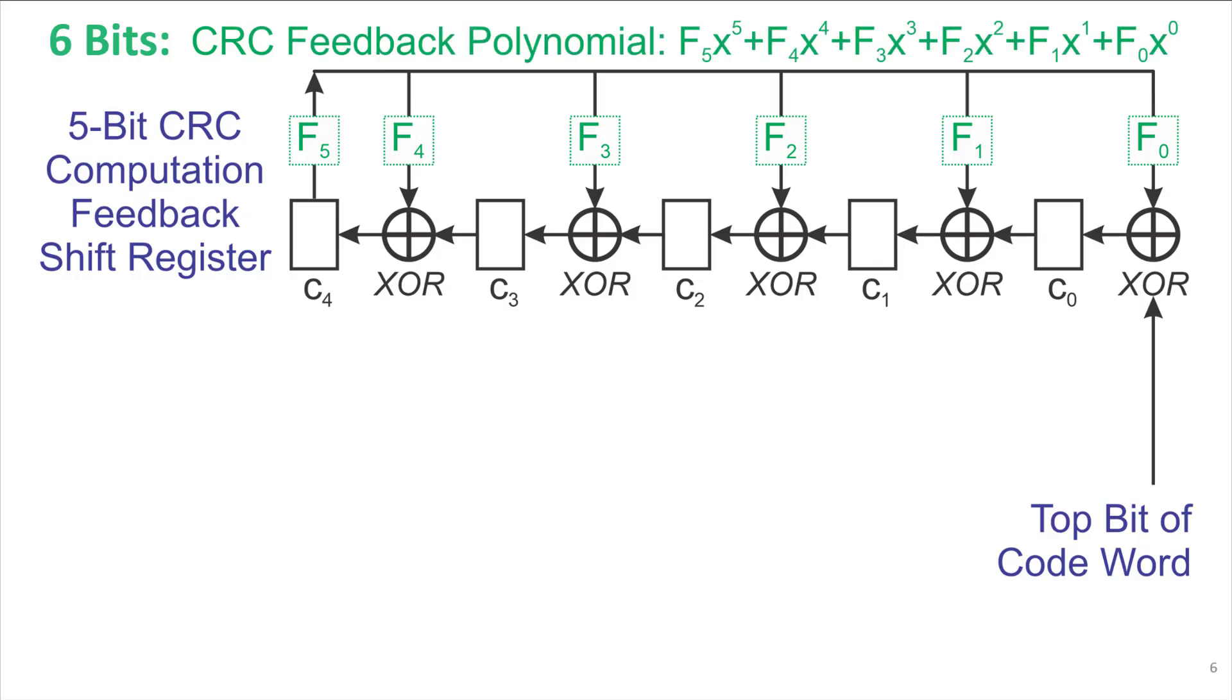Generically, the idea is that a feedback polynomial is f5 times x to the fifth plus f4 times x to the fourth and so on down to f0 times x to the zero. This way, any feedback polynomial can be specified. However, the useful ones all have a 1 in the top bit because otherwise the hardware won't actually do anything really useful.